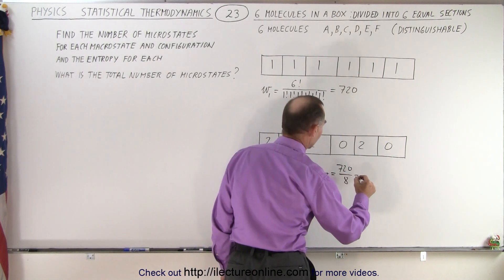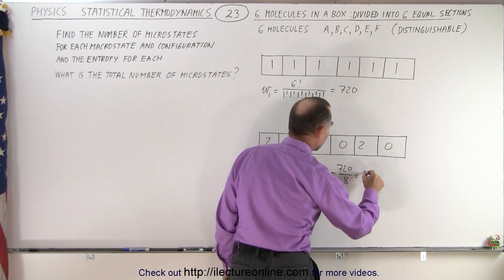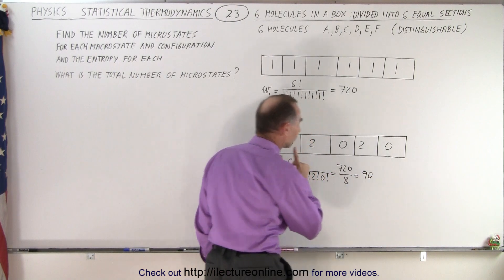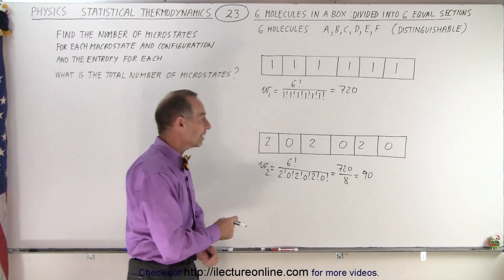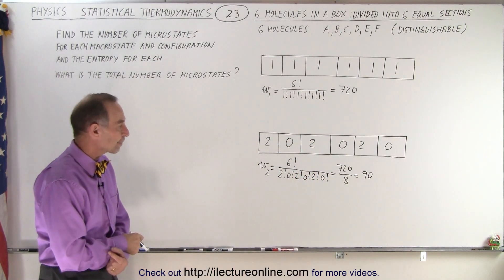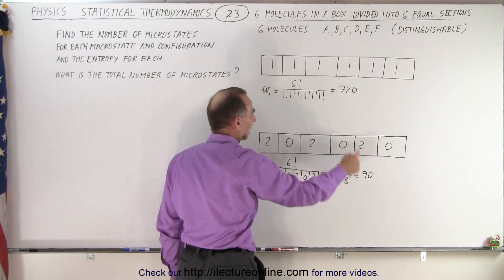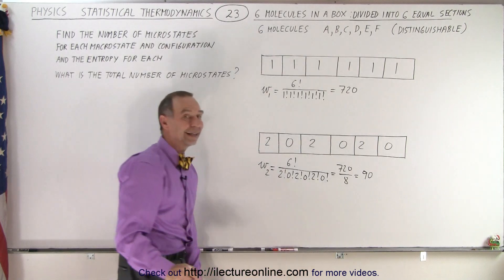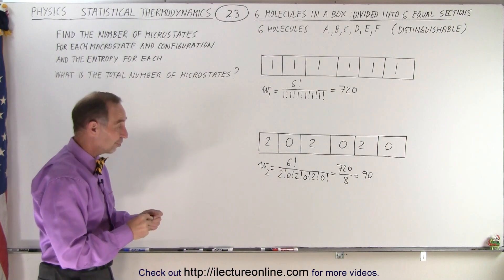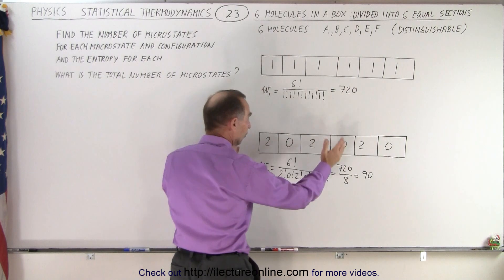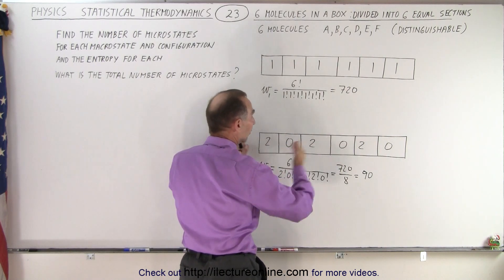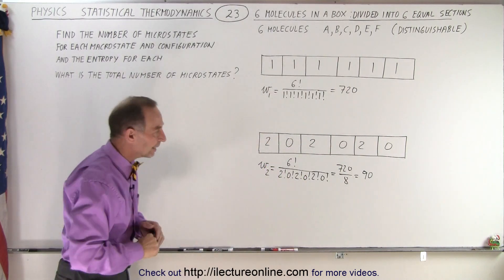That means that this is equal to 90, 90 microstates, because 8 times 9 is 72 so that's 720. Alright, so we have 720 different microstates here and 90 different microstates in this particular arrangement. Of course there's many different ways when we have this arrangement here where we could put 0 and 2 but we're not getting into that yet.